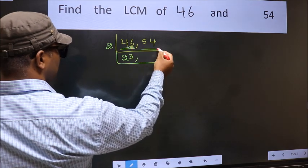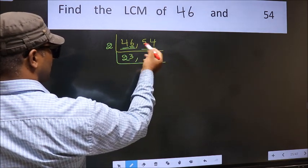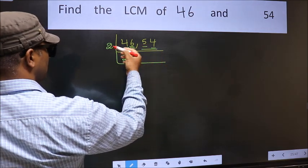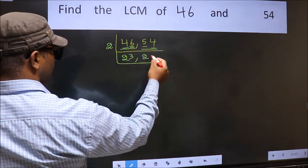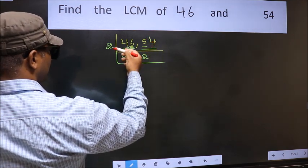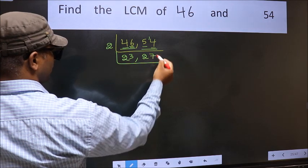Now the other number 54, last digit 4 is even, so this is divisible by 2. First number 5. A number close to 5 in the 2 table is 2 times 2 is 4. 5 minus 4 is 1, 1 carried forward makes 14. When do we get 14 in the 2 table? 2 times 7 is 14.